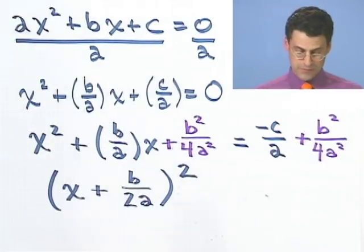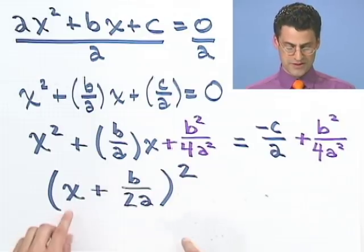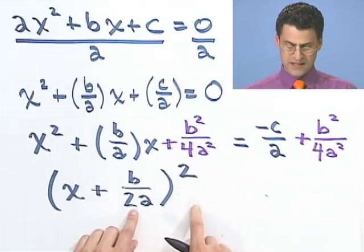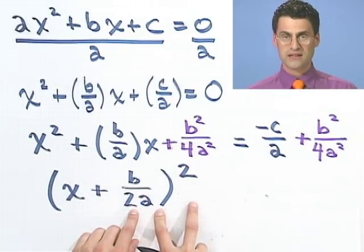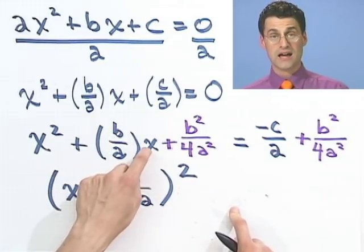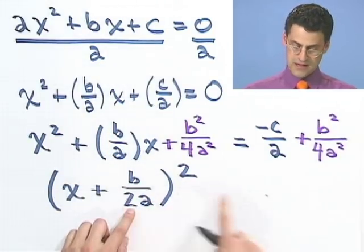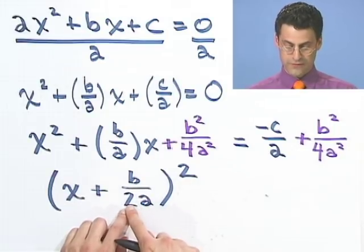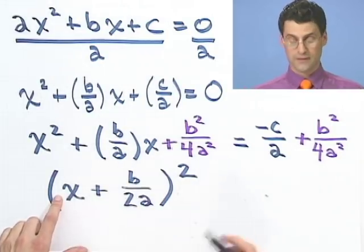We can check that by multiplying this by itself. If you FOIL, you'll see x times x. There's that. The inside term is b over 2ax and another b over 2ax. So that's just going to be b over a x. And this times the last term is going to be b squared over 4a squared. So in fact, this really is a perfect square.